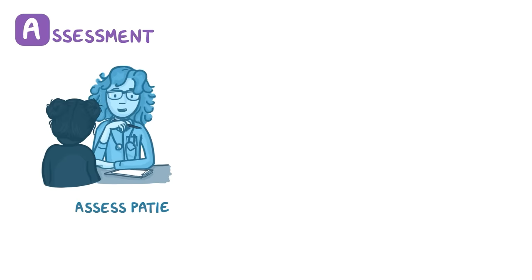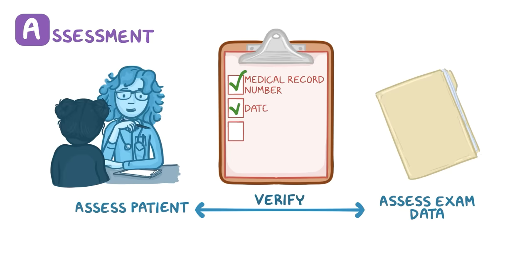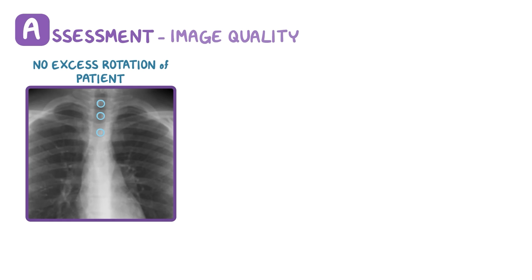A stands for assessment. To avoid errors and wasted time, you should always begin by assessing the patient and exam data. You want to verify the patient's data with the exam data — the medical record number, date of the exam, etc. — to ensure that you are looking at the right study and patient. You also need to assess image quality, because this will impact the accuracy of the test in detecting pathology. For example, to ensure there isn't excess rotation of the patient, you should make sure that the medial ends of the spinous processes are equally distant from the border of the vertebral bodies. Rotation throws off the usual x-ray anatomy and introduces unwanted variation.